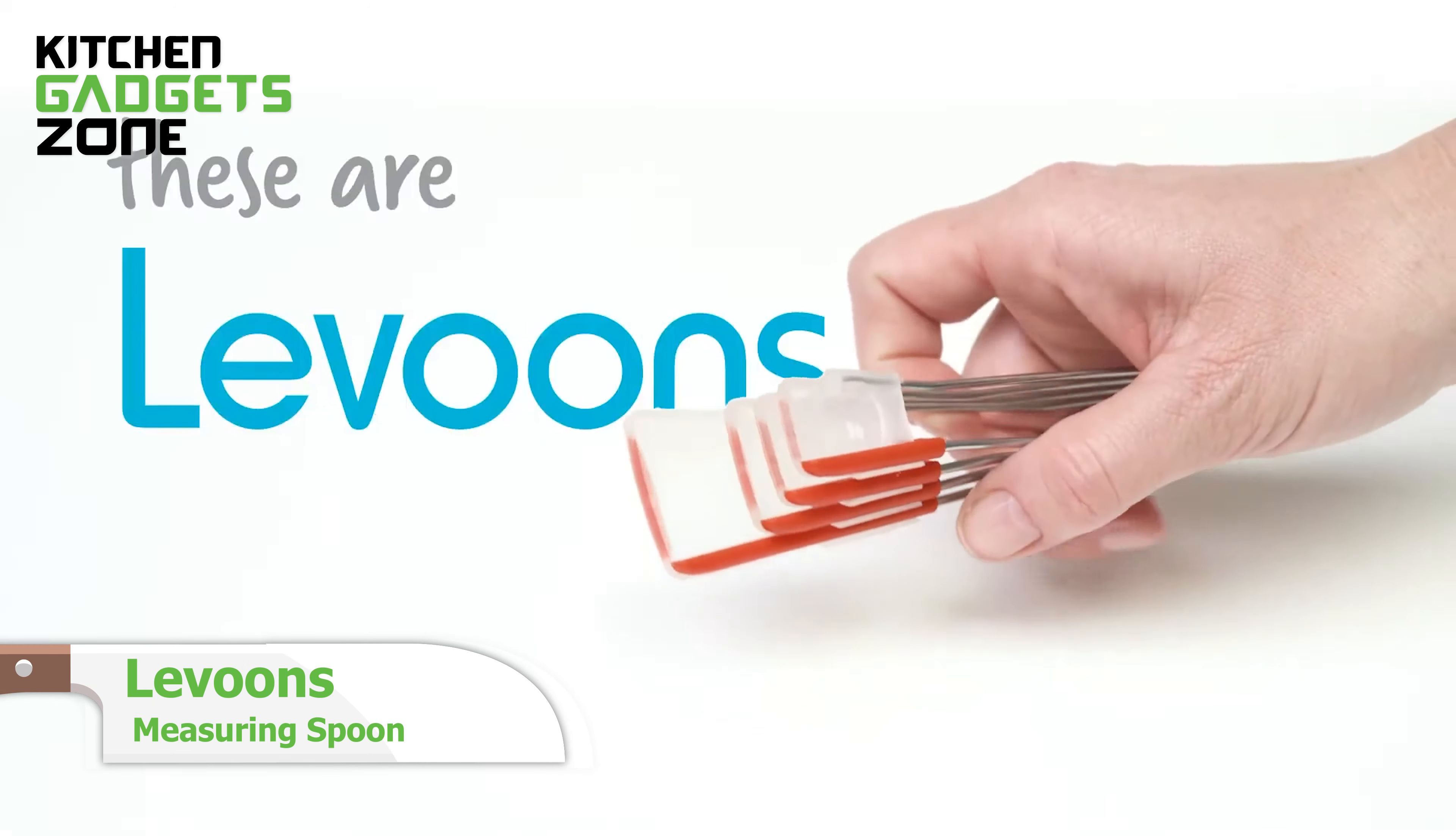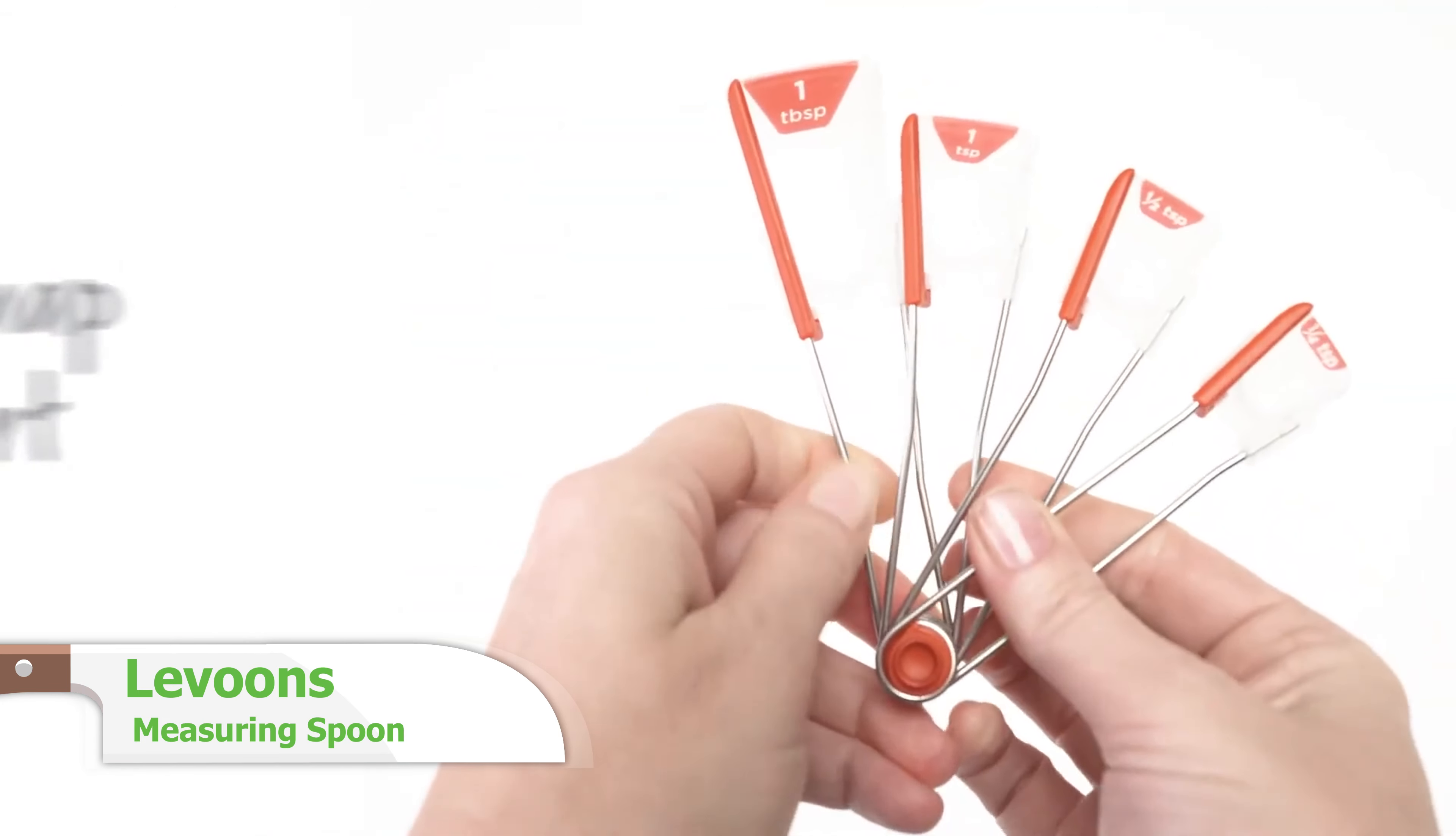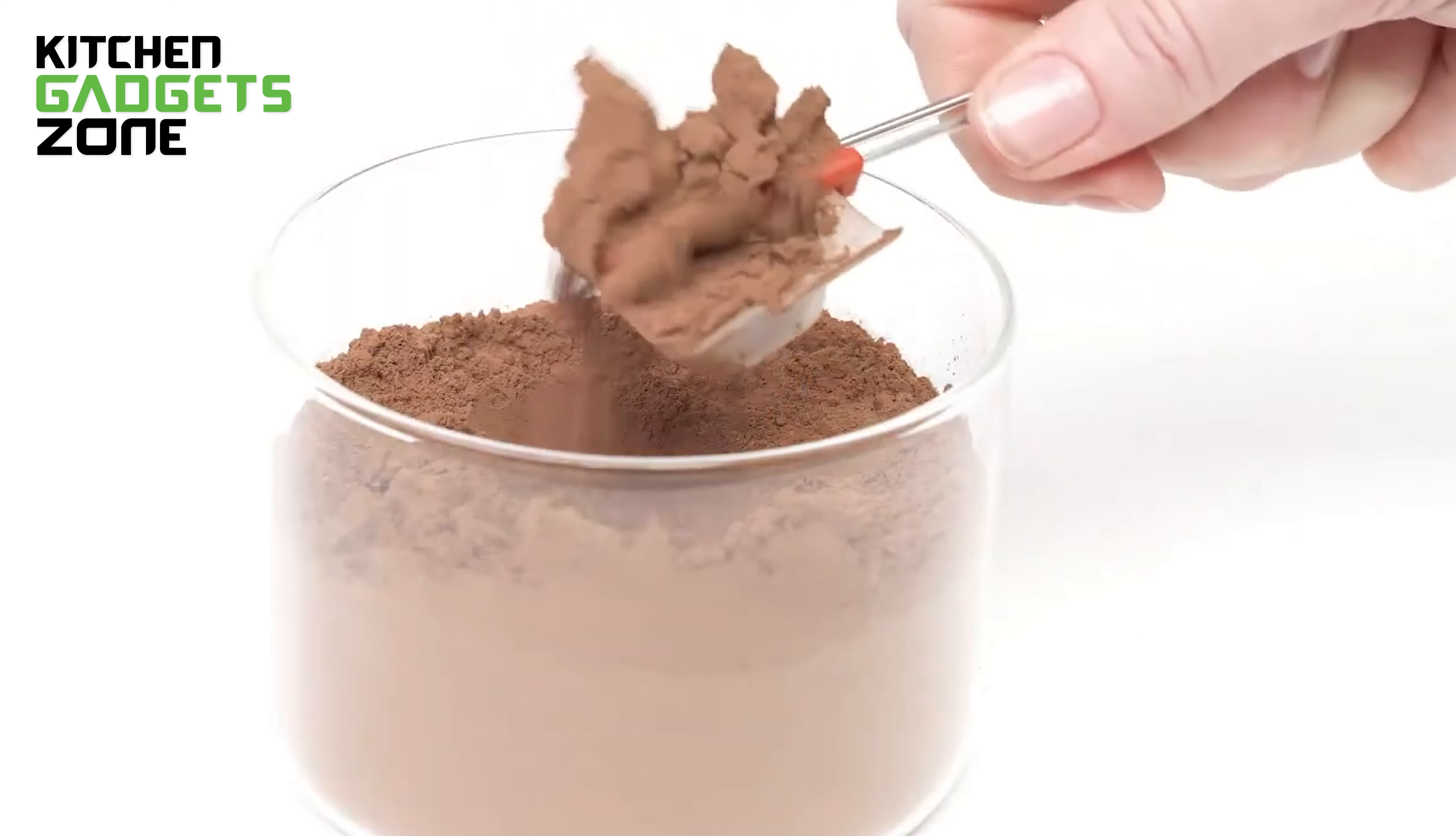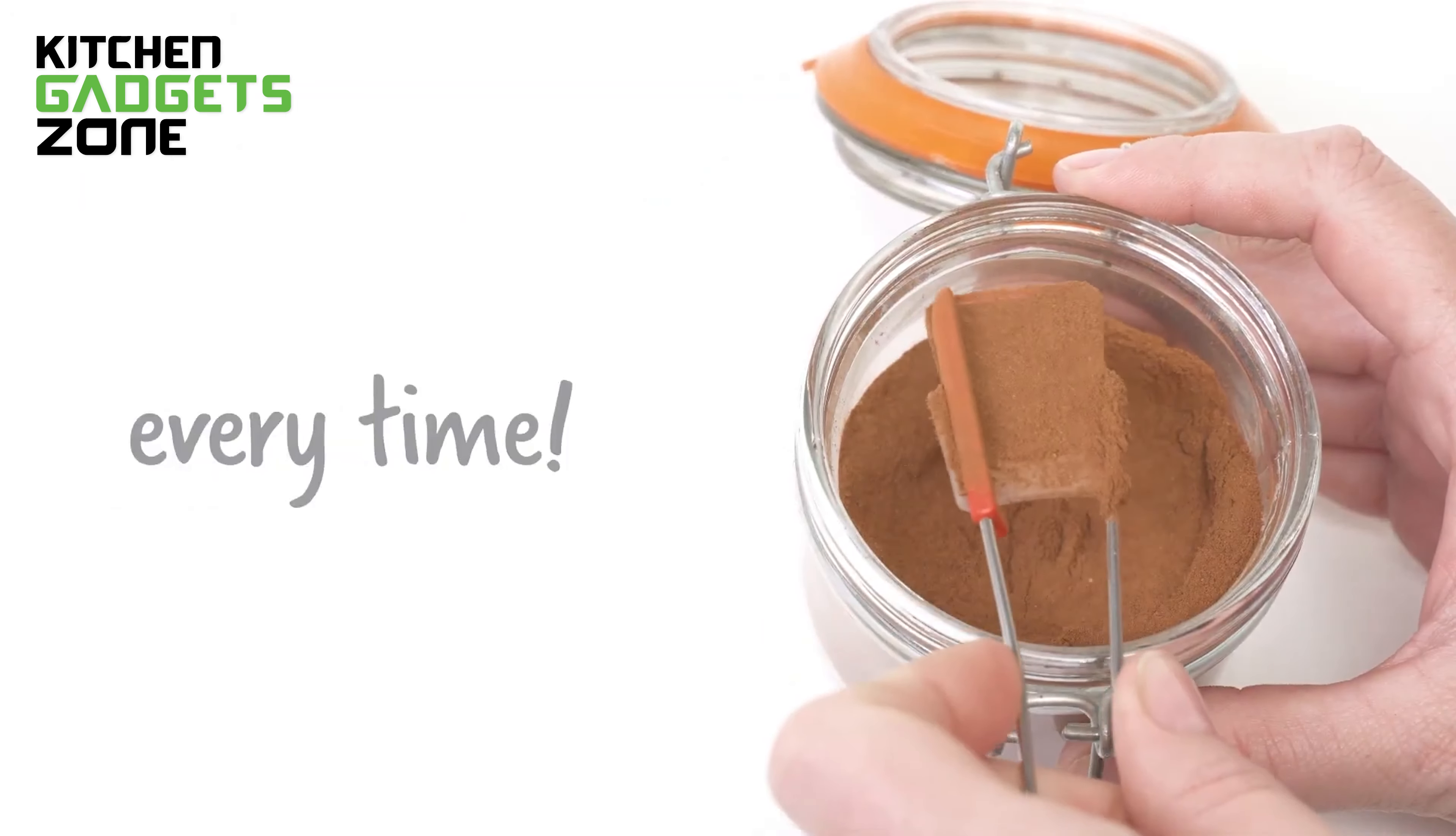Precise measuring has never been easier with lavoons. Did you know that a lavoon is a level spoon? With this ingenious set of four measuring spoons, you can accurately measure liquids and powders to ensure you get the desired amount every time.